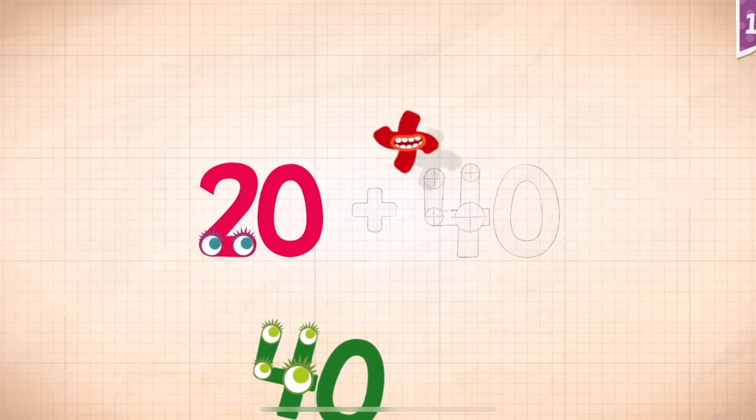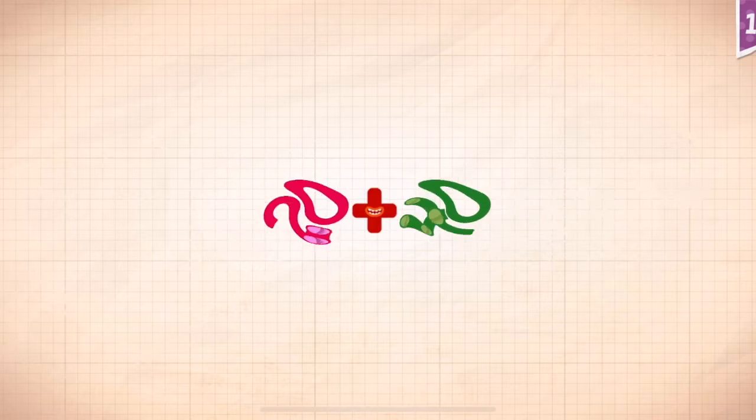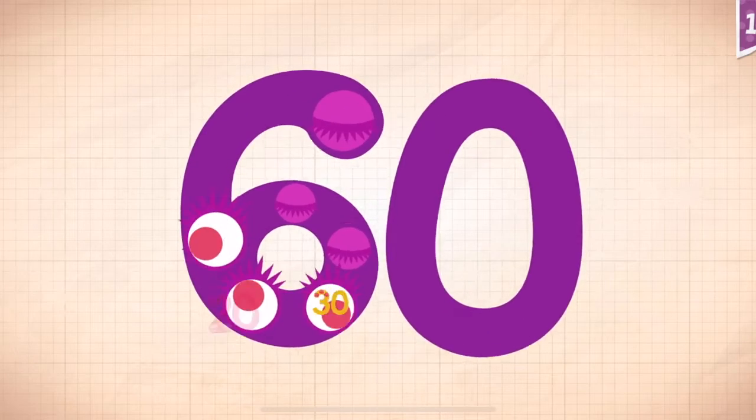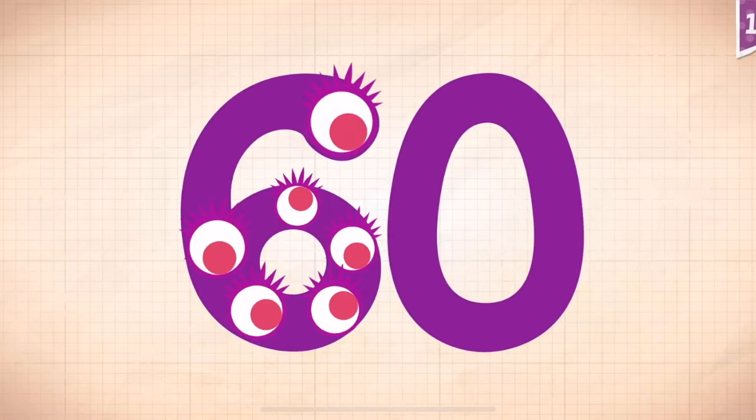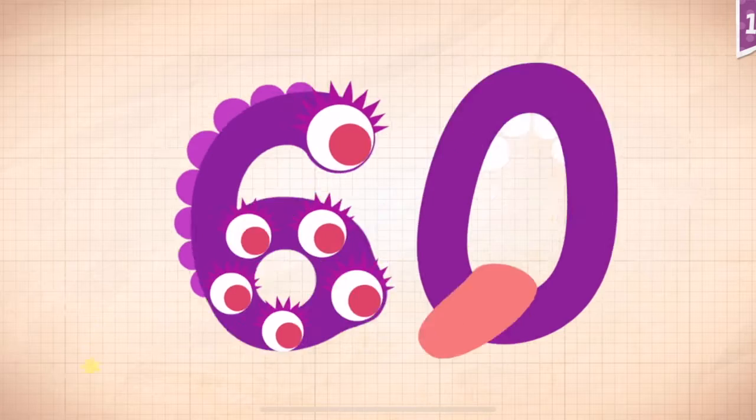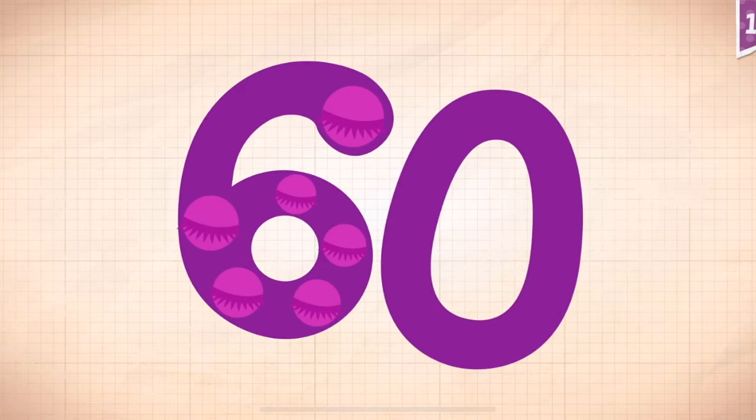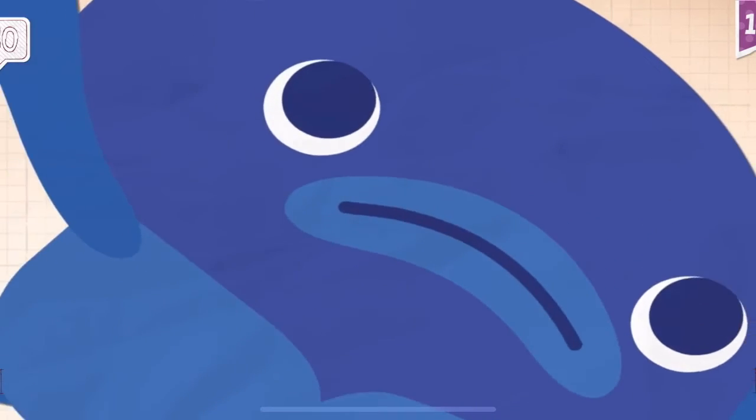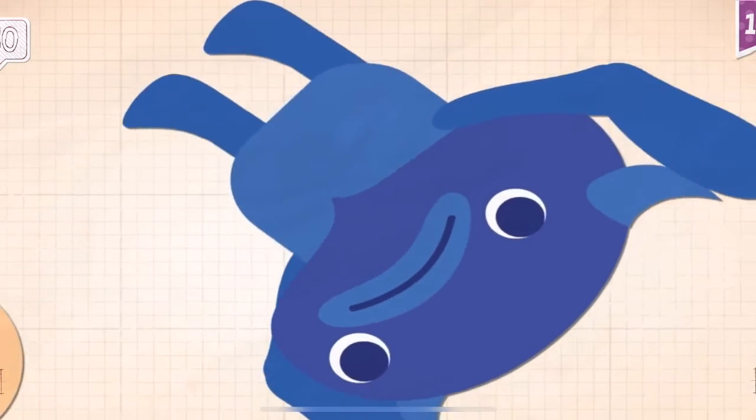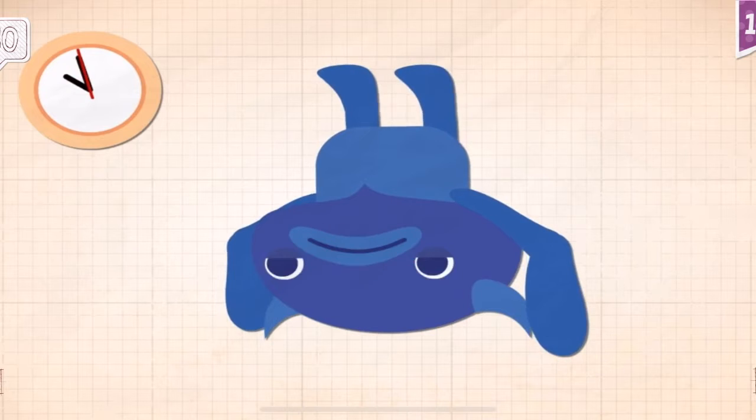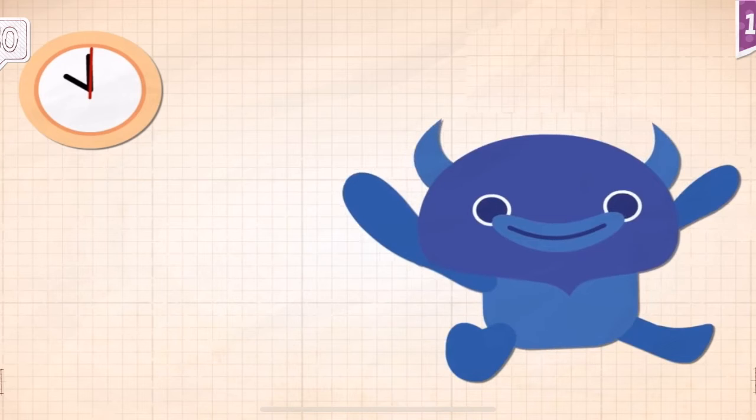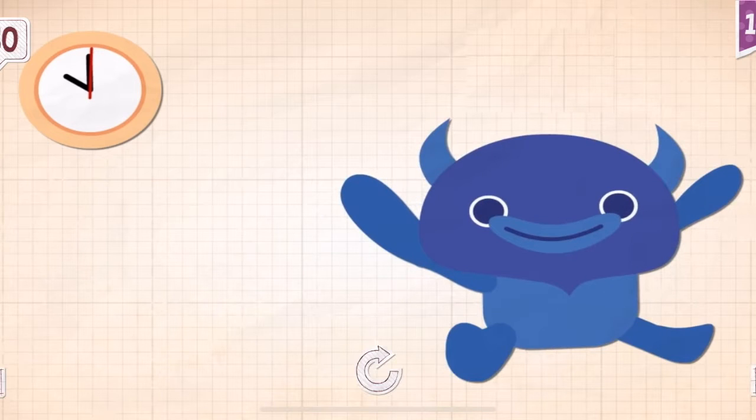20 plus 40 equals 60. Touch the monster's eyes. 10, 20, 30, 40, 50, 60. Yay! Big Blue did a headstand for 60 seconds.